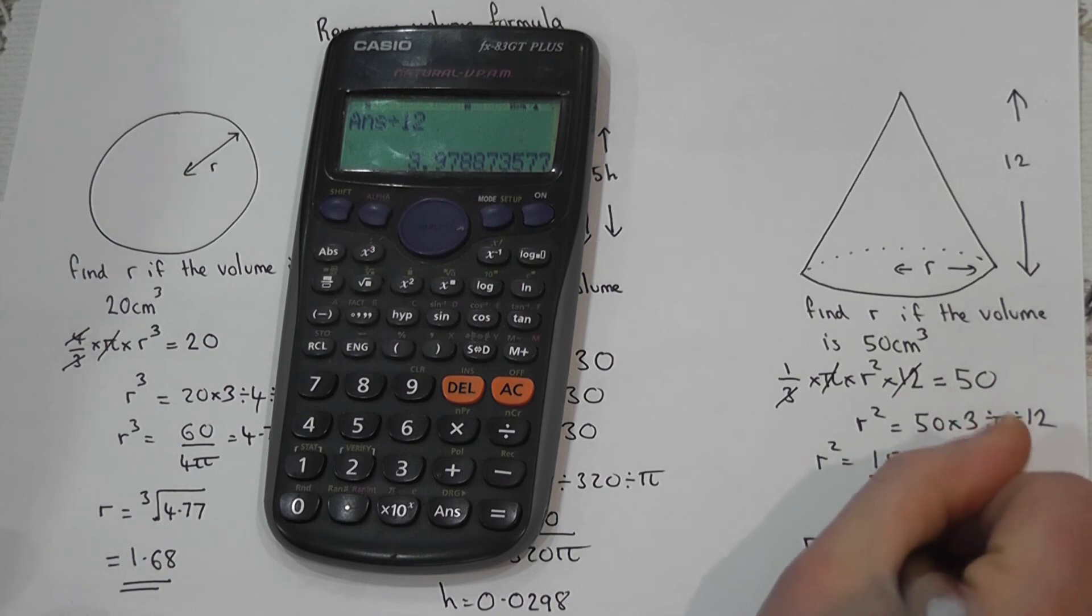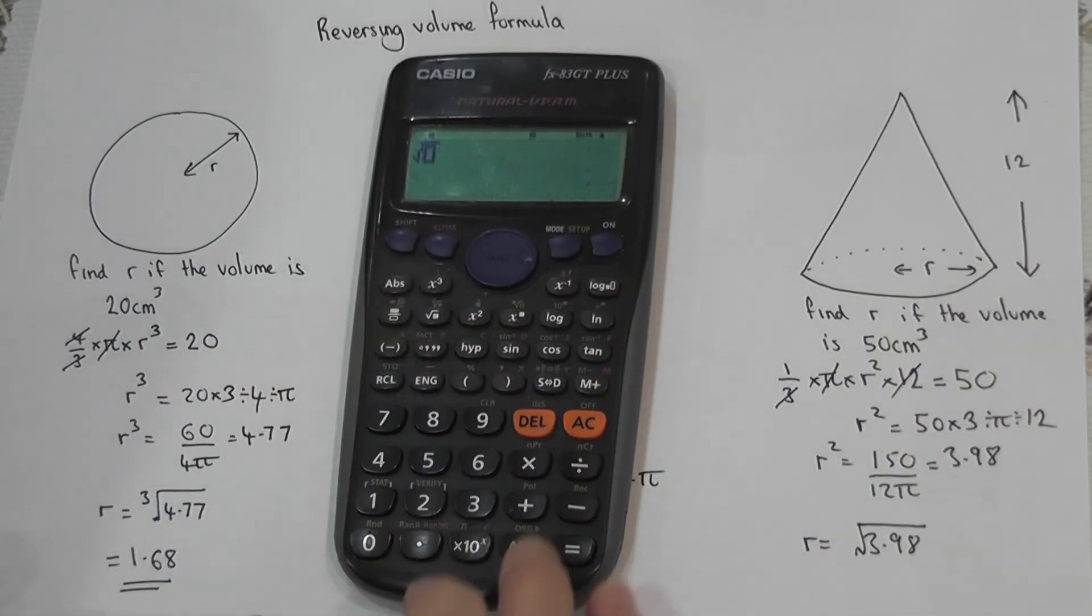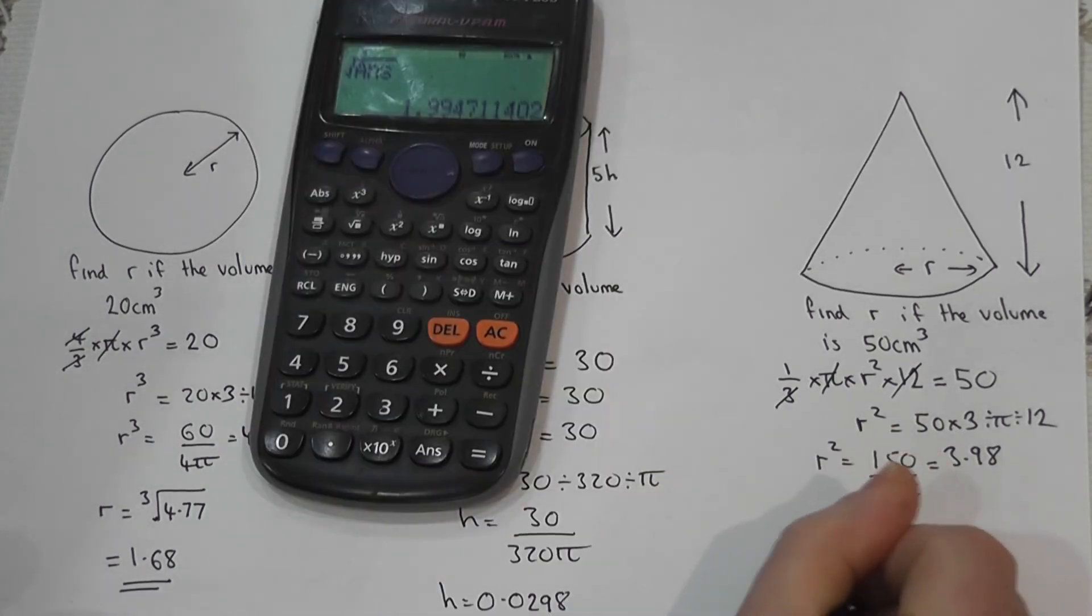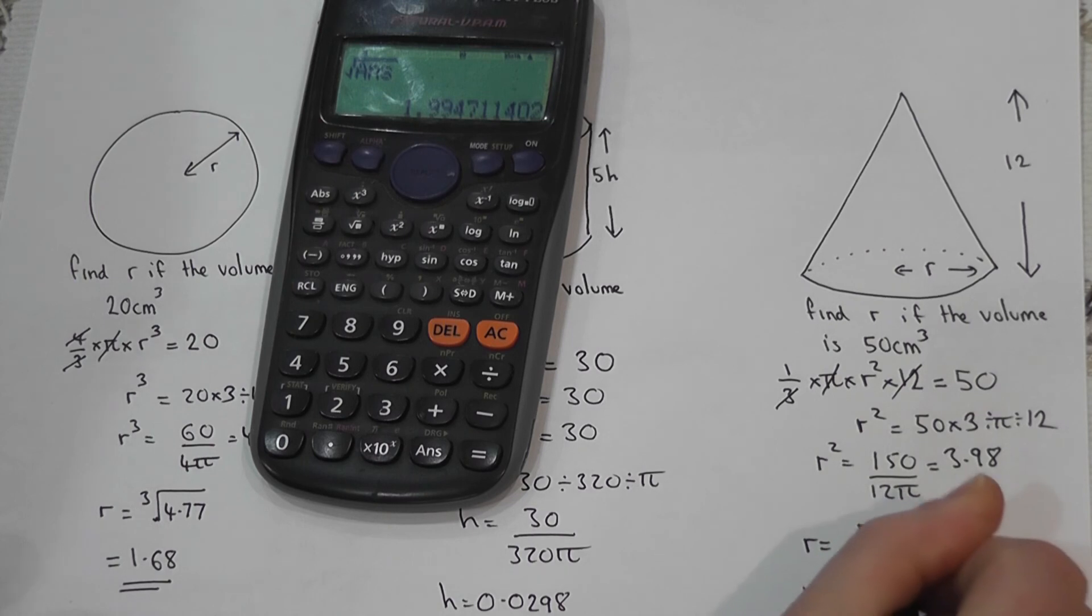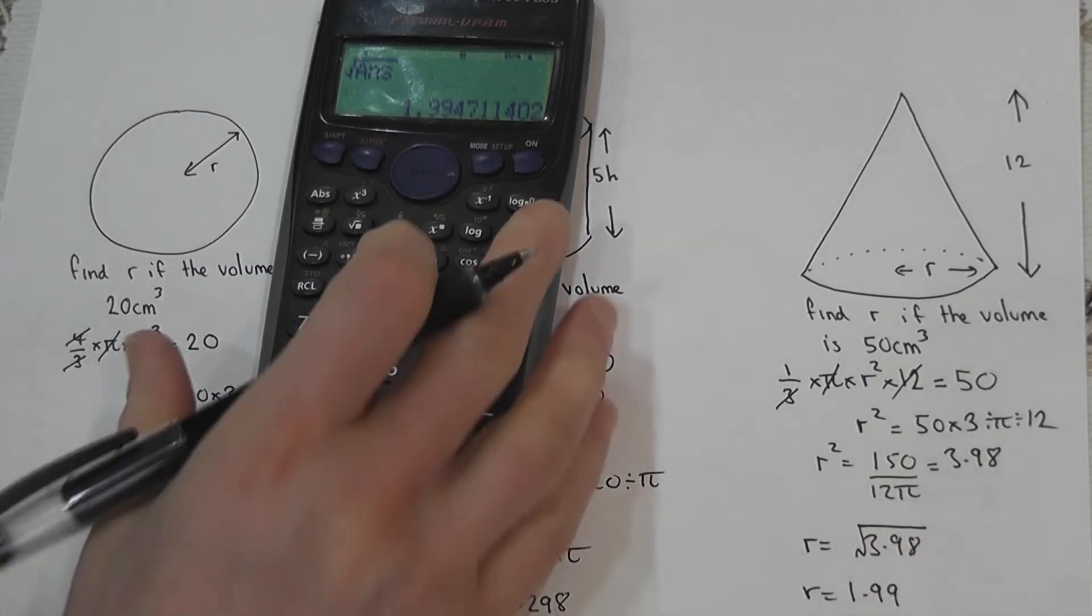So that's r squared. So to find r, I'll then do the square root this time, because it was r squared, of this exact answer. So I'll do the square root of this exact answer, and I get from that that r equals 1.99 to 3 significant figures.